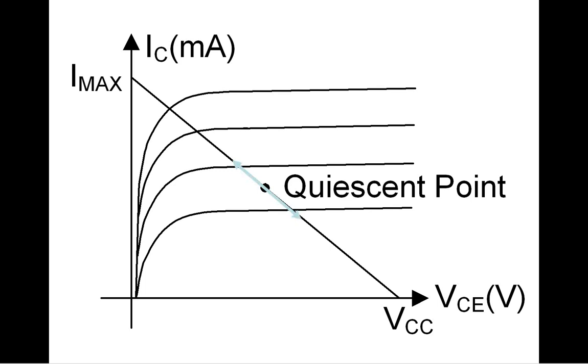In that case, common emitter amplifier operates as a Class A amplifier. It means that it amplifies the input signal for negative and positive half period alike.